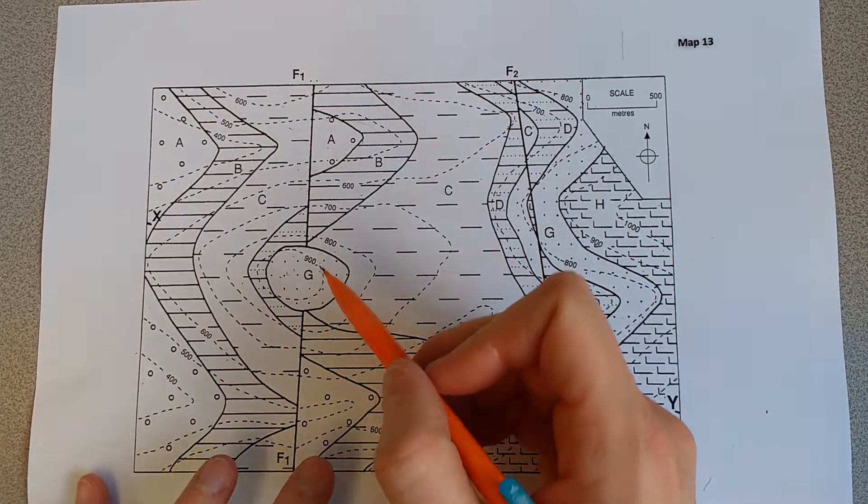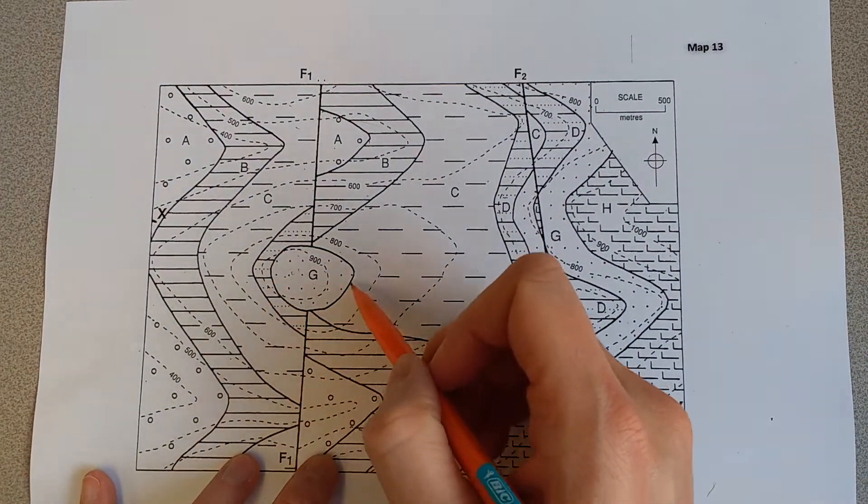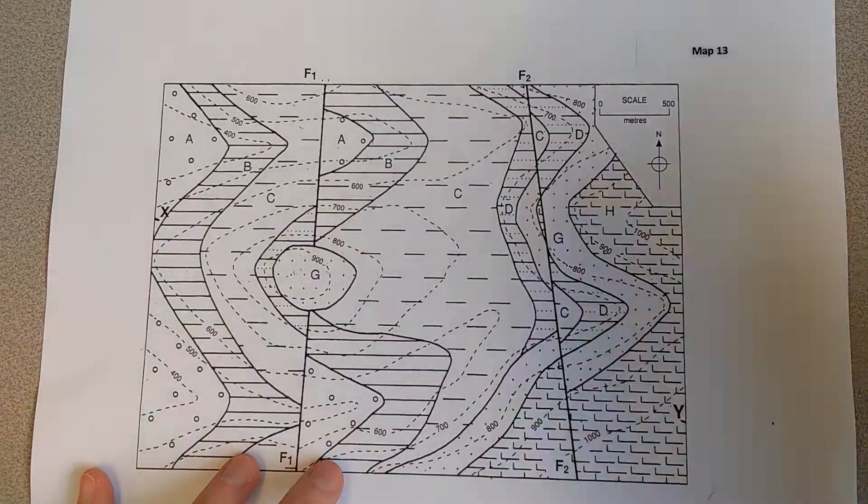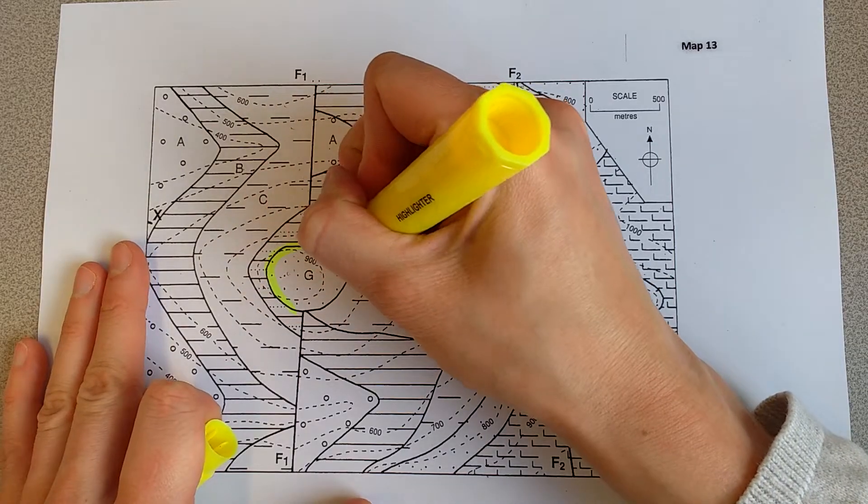The really obvious part in our map where we've got a truncation is this little island of G, which you can see is cutting across everything else. So this here is the first part of our unconformity, so I'm just going to highlight that in yellow.